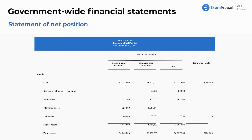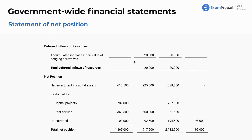Here's an example of our statement of net position. Governmental activities include governmental funds as well as internal service. Business-type is just enterprise, and fiduciary is shown separately. You'll see cash, derivatives, and normal balance sheet items, along with deferred inflows of resources and net position — net investment in capital assets, restrictions, and unrestricted. You don't need to memorize this exactly; just be familiar with it. If you see a question about it, refer back to it, just like in REG you refer to the tax form, or in audit you refer to the audit report.